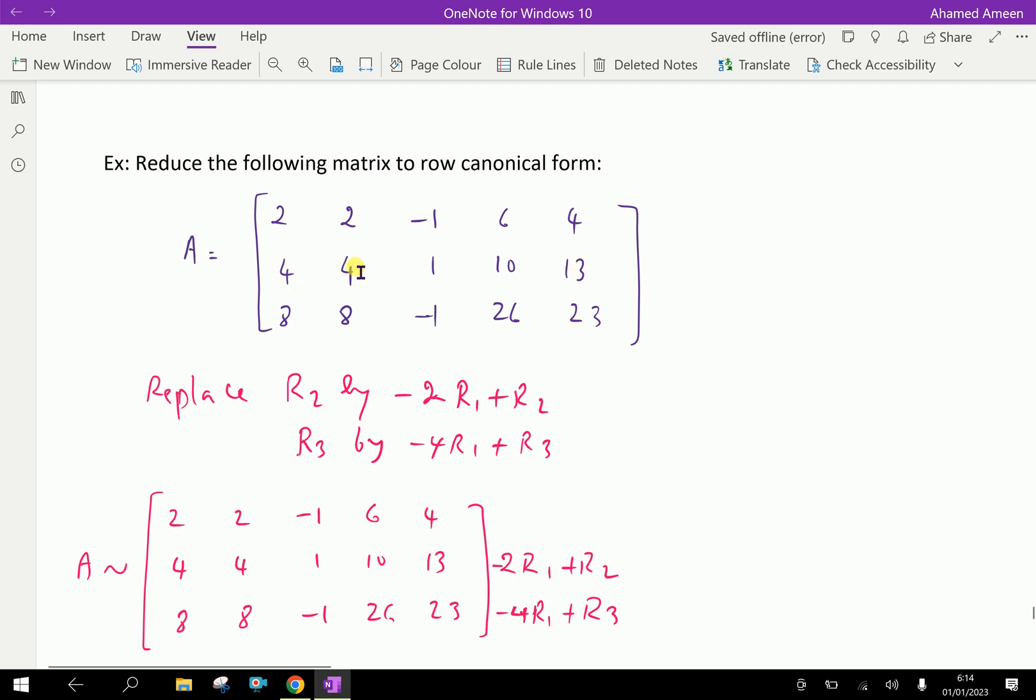Here, by replacing some rows and operating with those rows, we can get the row canonical form. Look at this matrix, this row 1, 2, and 3.